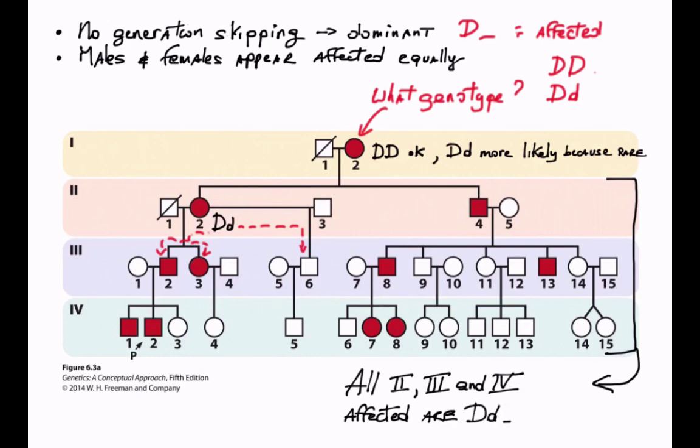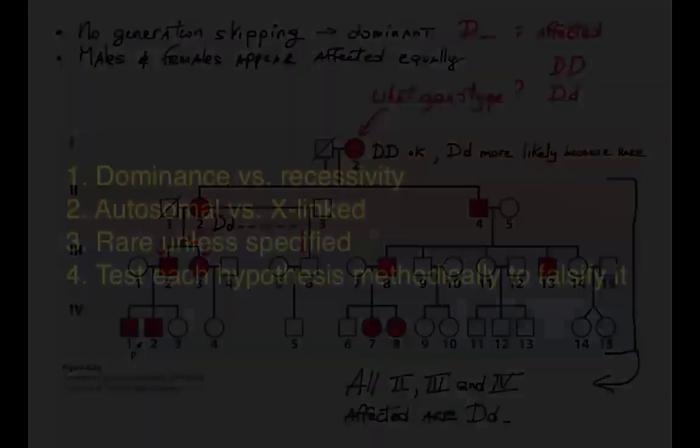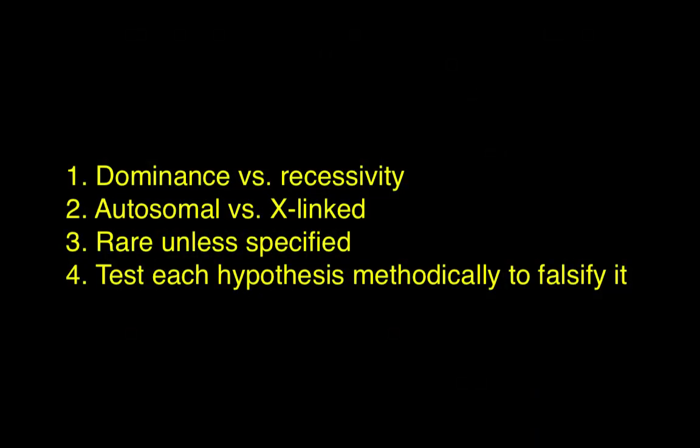In summary, a pedigree provides a convenient way to display clinical observations and to organize hypotheses. These must be considered methodically, one after the other. It is advantageous to first evaluate recessivity versus dominance, then to examine autosomal versus sex-linked inheritance. In any case, any satisfactory hypothesis must be consistent with all the data.